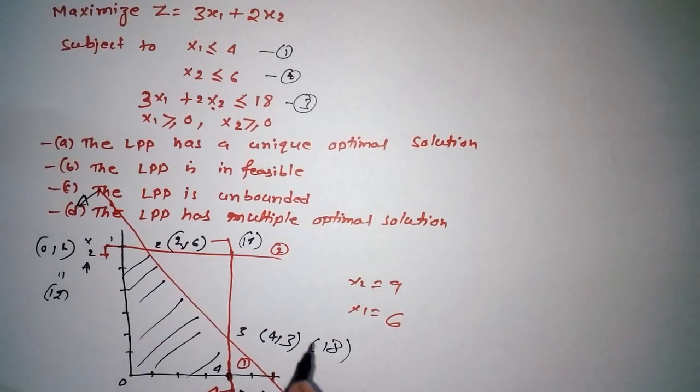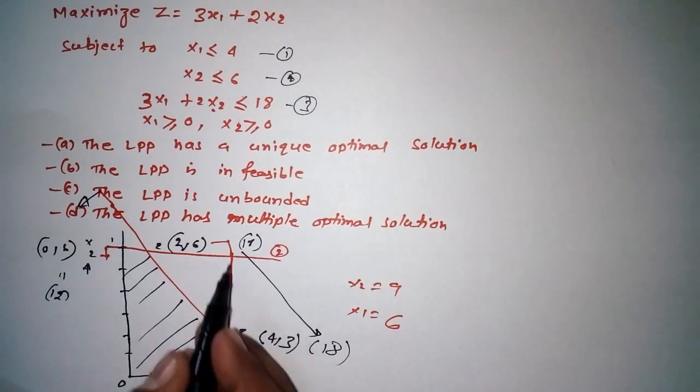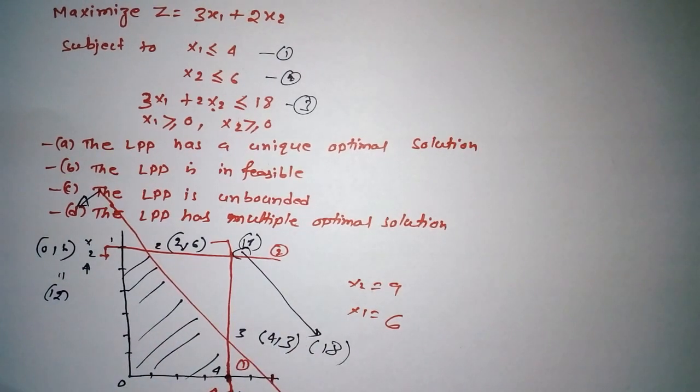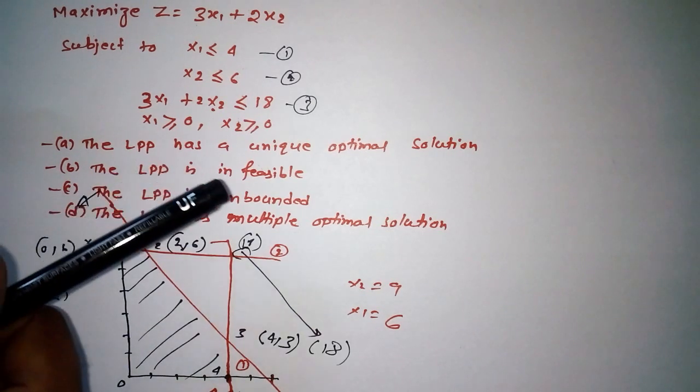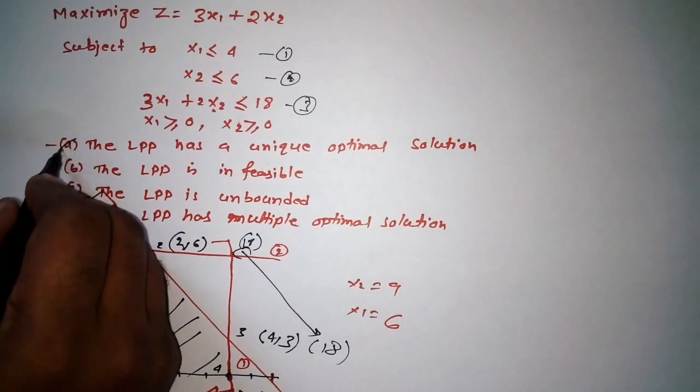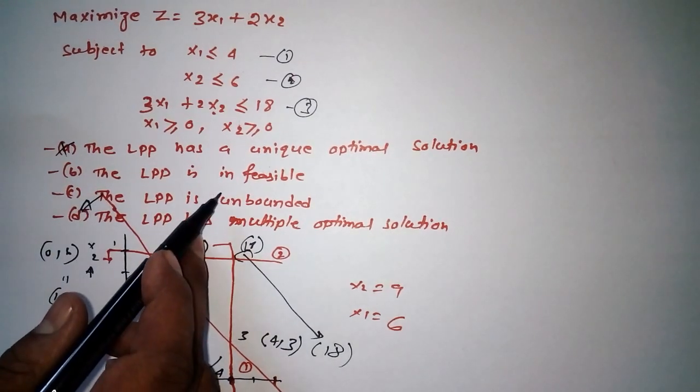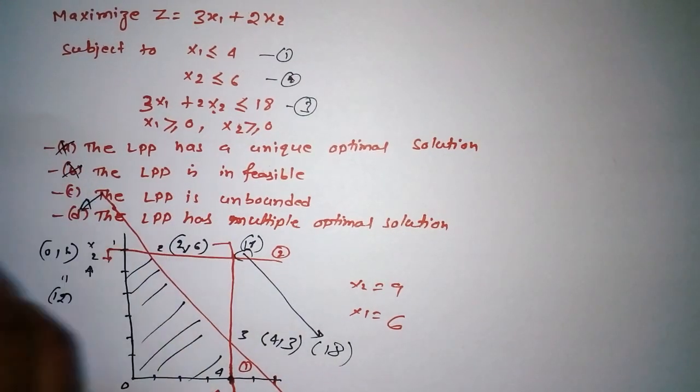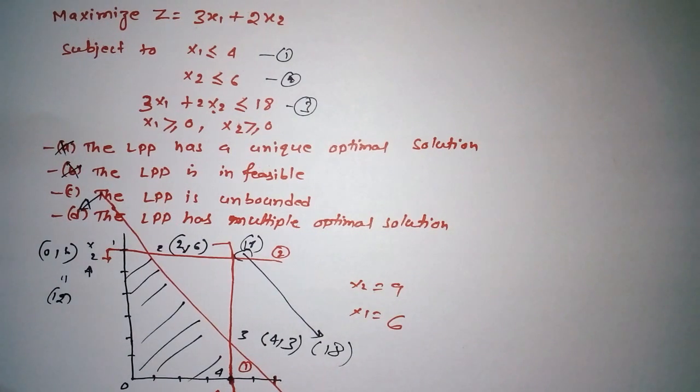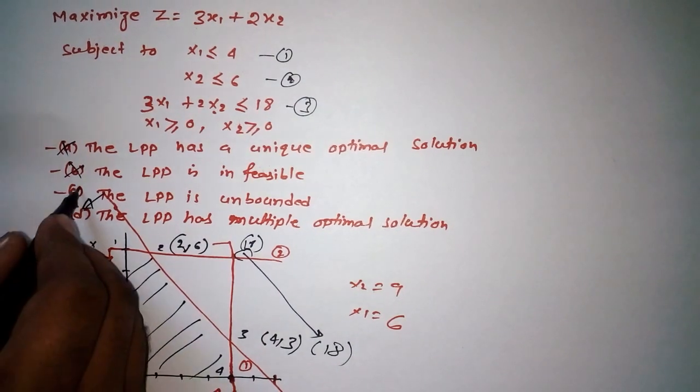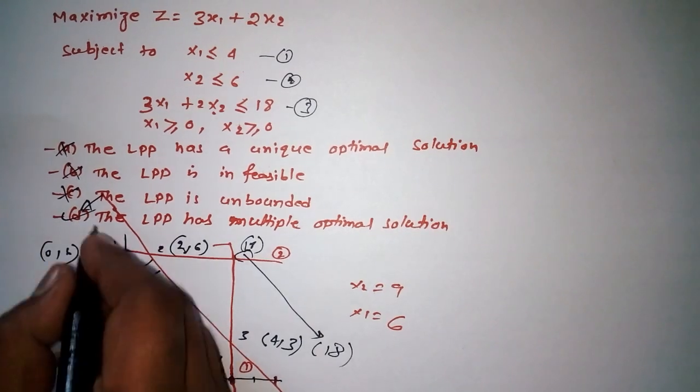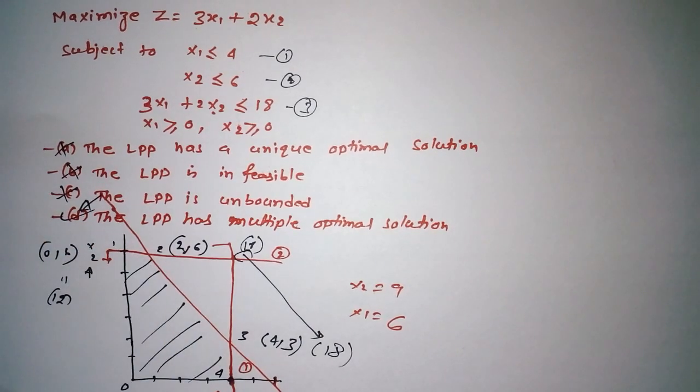We are getting two optimal solutions, which means multiple optimal solutions. Let's look at the options given in this question. A: LPP has a unique optimal solution - not the answer. B: LPP is infeasible - not the answer. C: LPP is unbounded - not the answer. So the answer is D: the LPP has multiple optimal solutions. It's as simple as that.